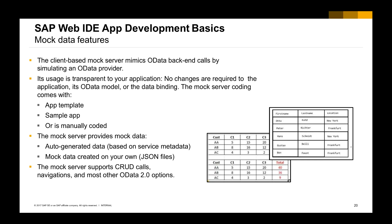With the mockup data feature, the mockup data simulates the backend service data and is used transparently by your application. There is no change needed when you switch to connecting to the live system, because it is based on the same OData model, OData metadata, and data binding. The mockup server comes with the application template, so when you create your application based on the template, the mockup server will be available as well.